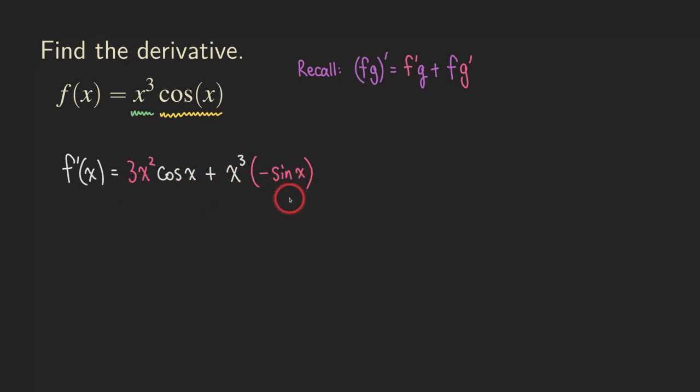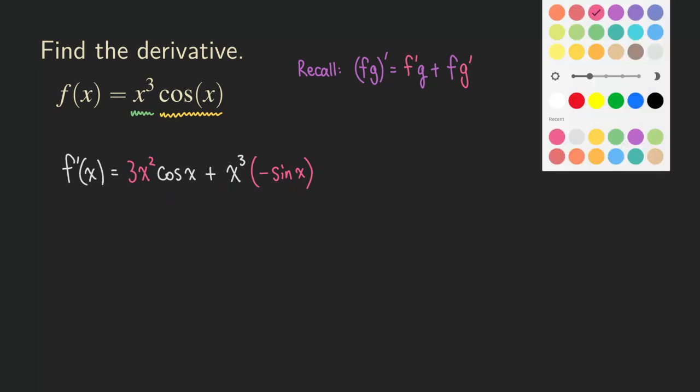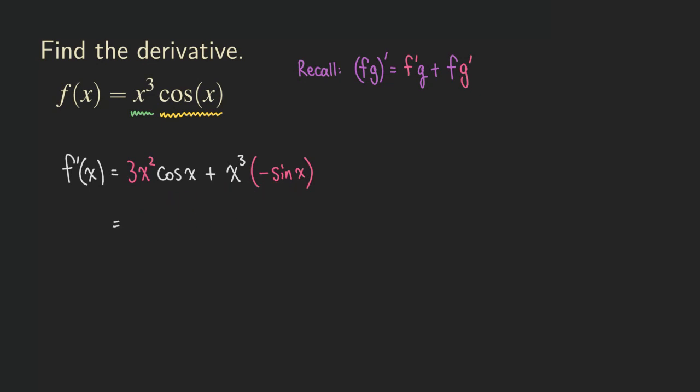Okay, so now we can just clean up the expression right here. And then we have our final answer, which is 3x squared cosine of x.